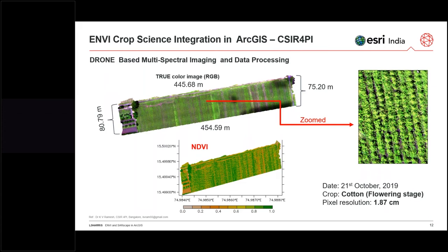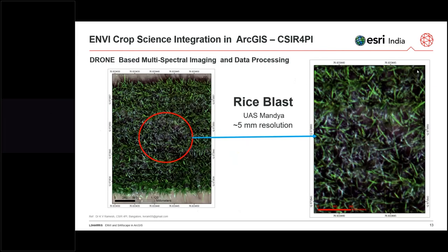The drone images were captured by RedEdge and MicaSense sensors, processed with Drone2Map for ArcGIS. Data was then accessed in ArcGIS Pro using ENVI Crop Science tools and spectral index tools for monitoring the cotton flowering stage, performing NDVI and other indices. UAV images were also used to identify the rice blast area — the Crop Size tool marks the rice blast area with image enhancement techniques, clearly highlighting affected areas shown in red and brown color.